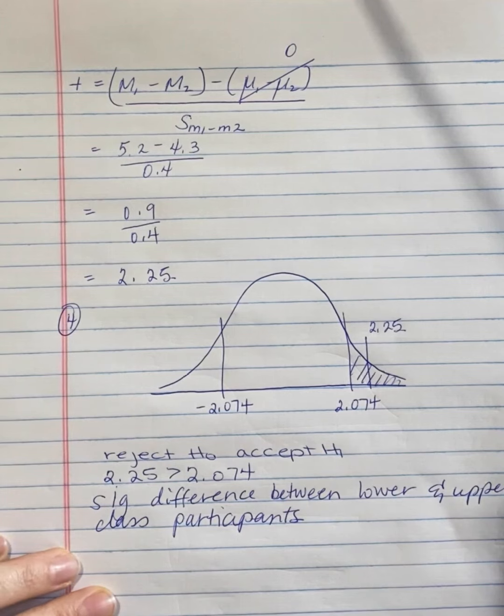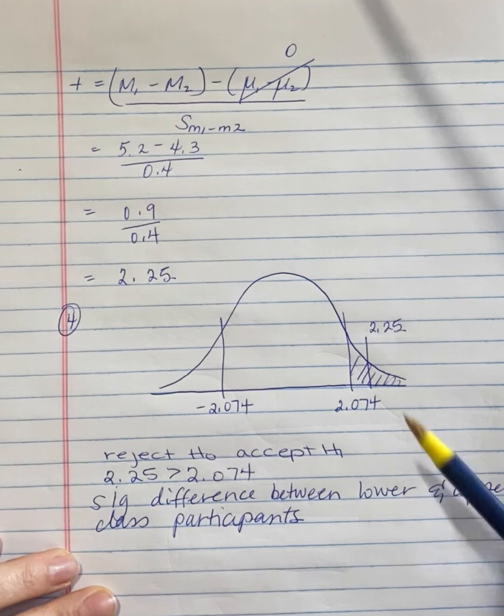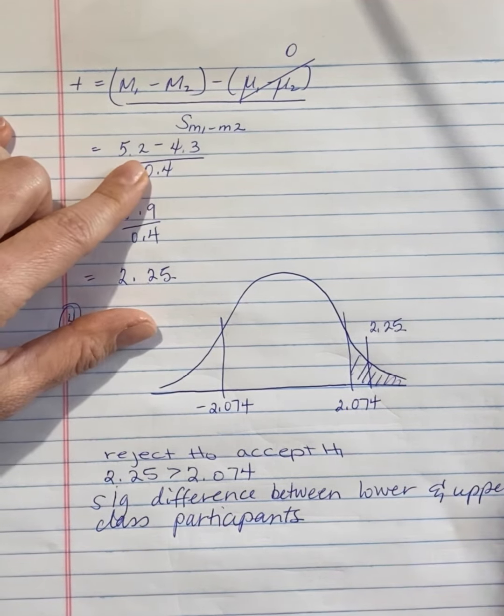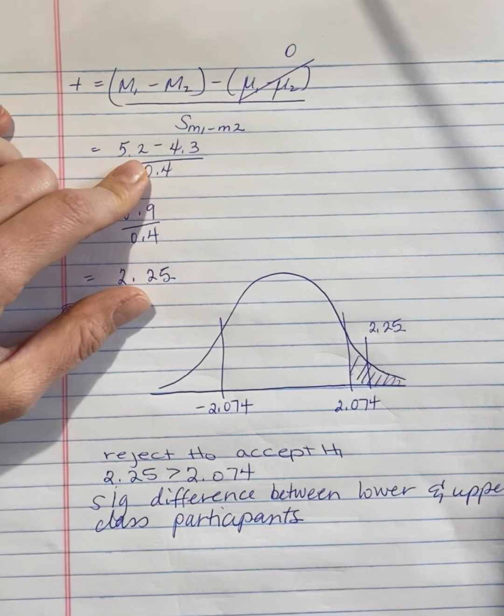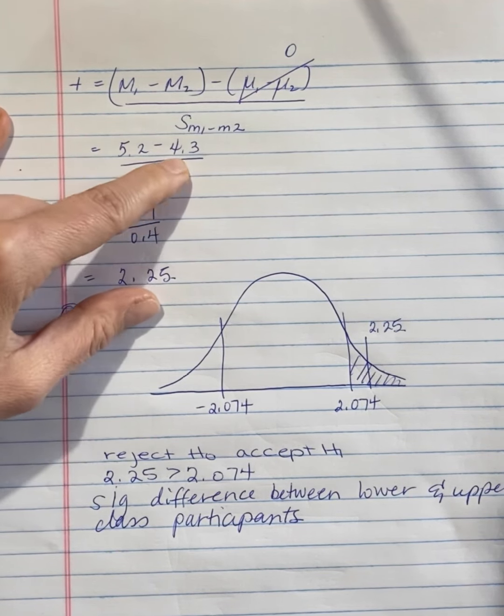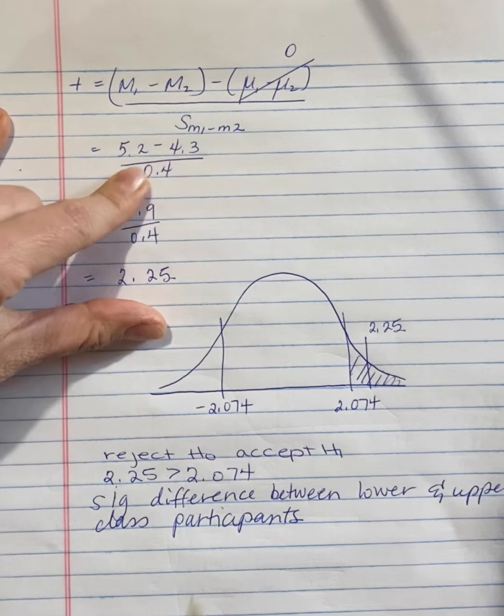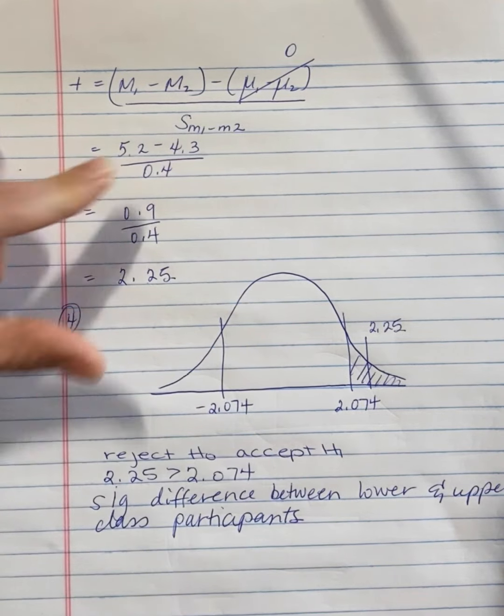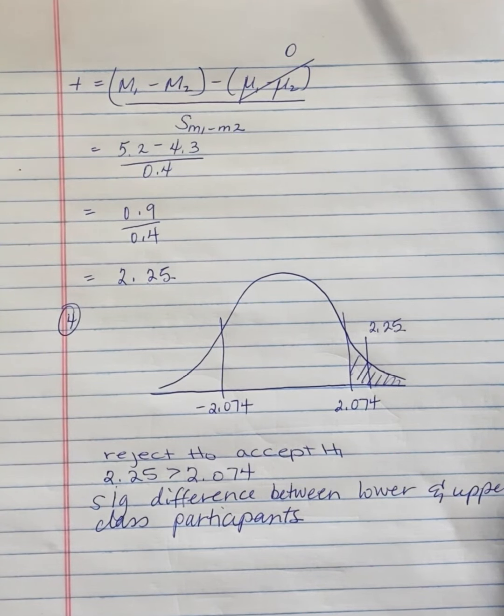And in particular, it's that the lower class participants, which is 5.2, gave significantly more points than the upper class participants. And we know the direction of that difference because we can see the means and there's only two groups. I'm going to pause here and then I will record the effect size measures.